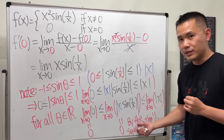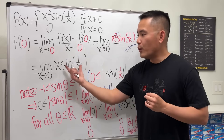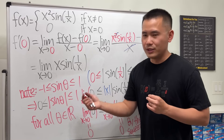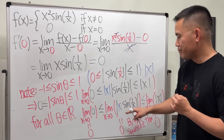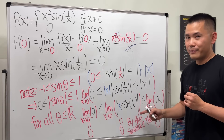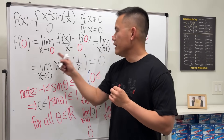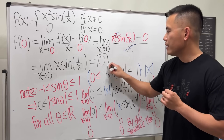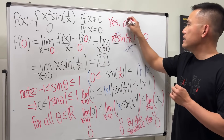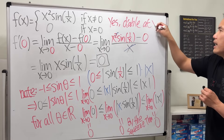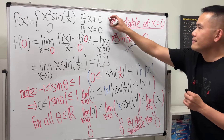There's one more limit rule: if the limit of the absolute value of a function equals zero, then the limit of the function itself also equals zero. Therefore, the limit as x approaching zero of x times sine of one over x equals zero, which means f prime of zero equals zero. So yes, this function is differentiable at x equal to zero.